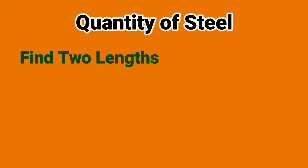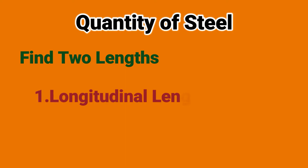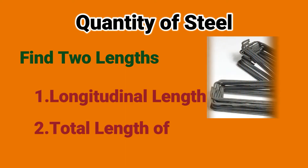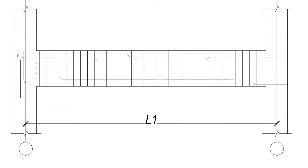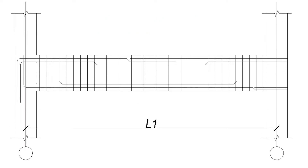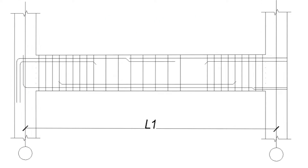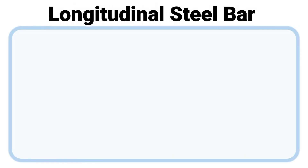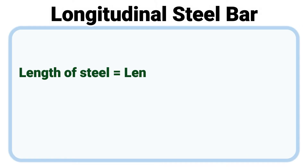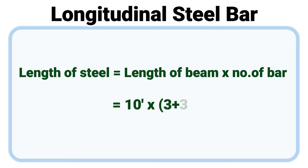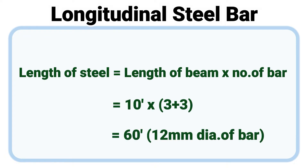To find out the quantity of steel, first we need to find two lengths: the longitudinal length of steel and the total length of stirrups. First, the longitudinal length of steel equals length of beam multiplied by number of bars — 10 into (3 plus 3). Totally we get 60 feet of 12 mm dia bars.